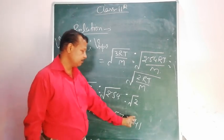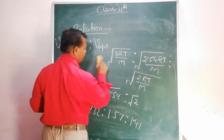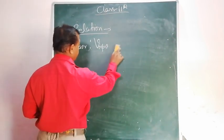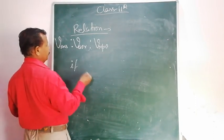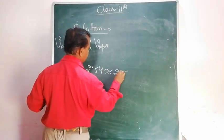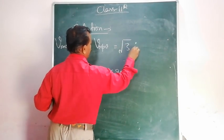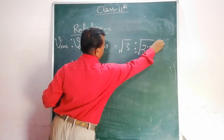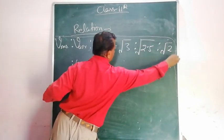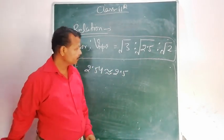This is the relation between these velocities. In general, if we write 2.5 for the average velocity factor, it will be easier to remember: root 3 : root 2.5 : root 2. Here, 2.5 is an approximation we assume. Okay, thank you.